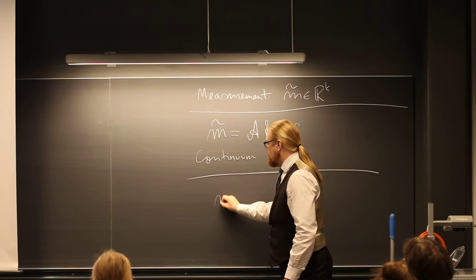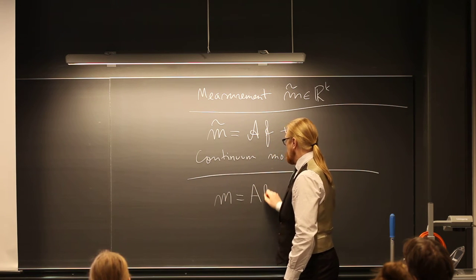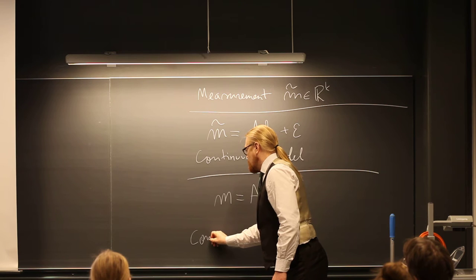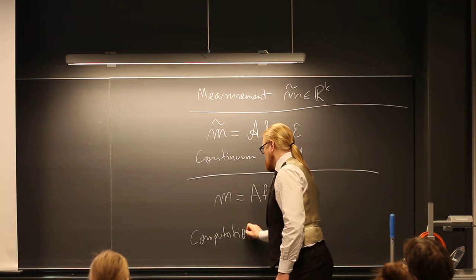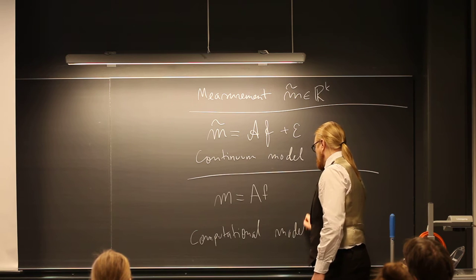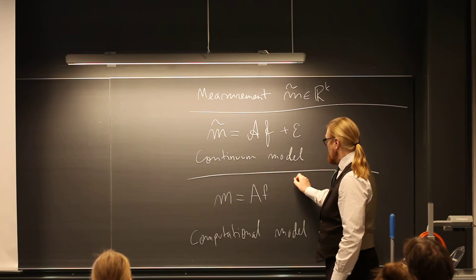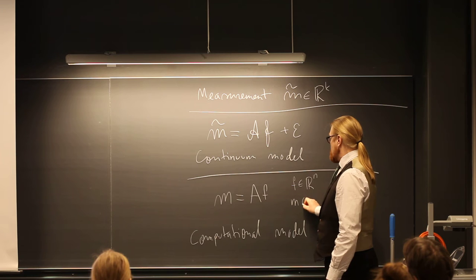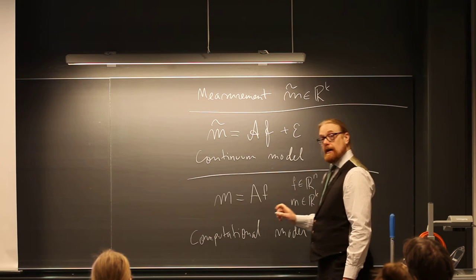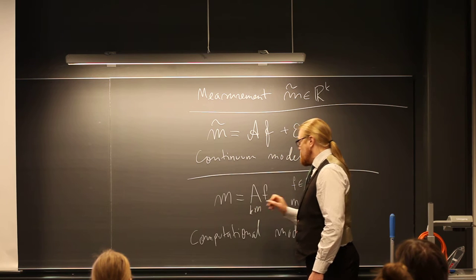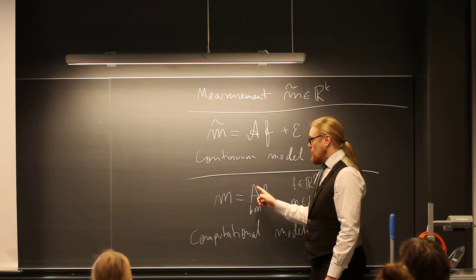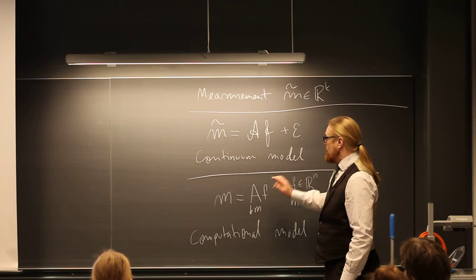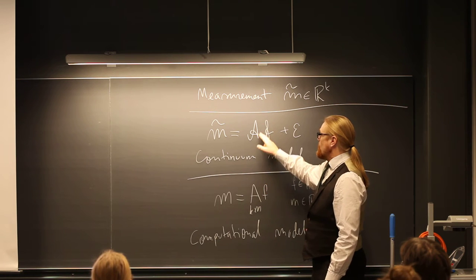So for computers we need something finite. For that reason we will build a computational model, which is fully discrete. So here f is in R^n, m is in R^k, and A is a k by n matrix.